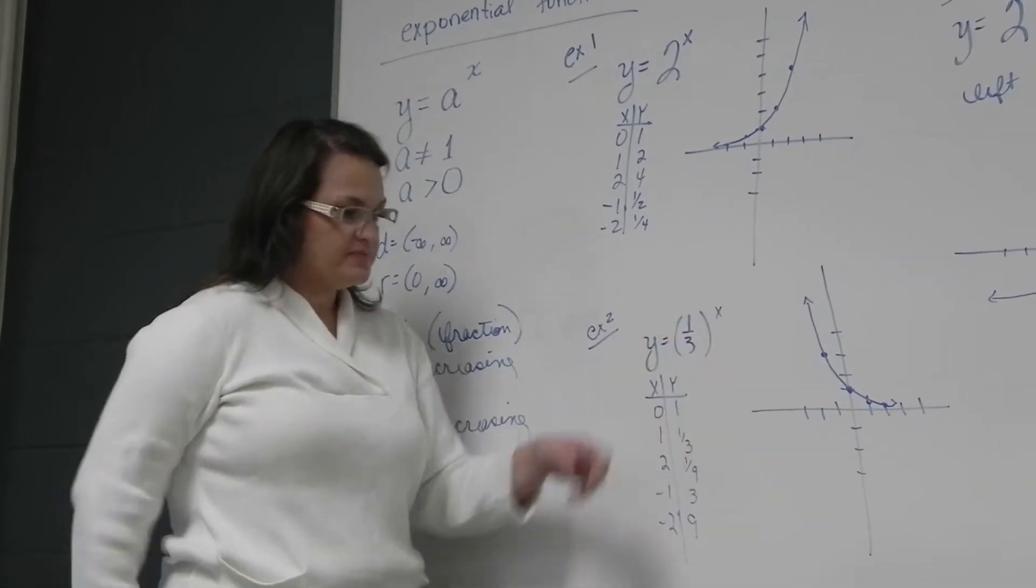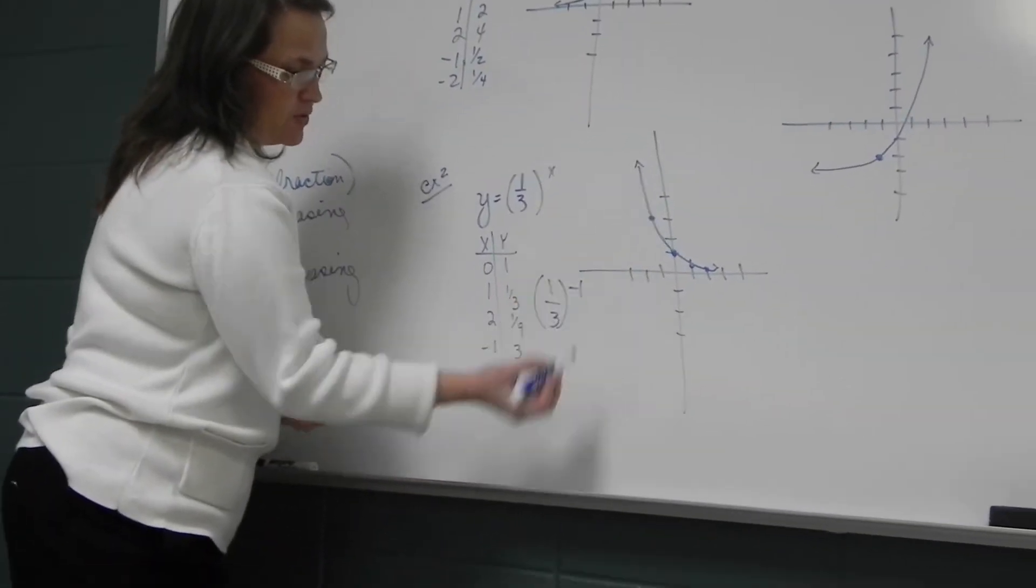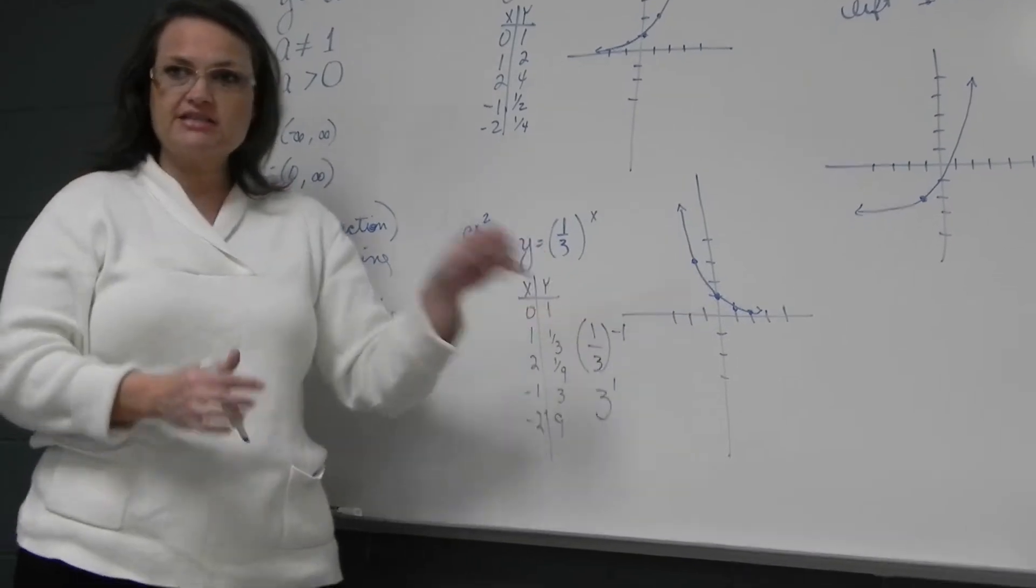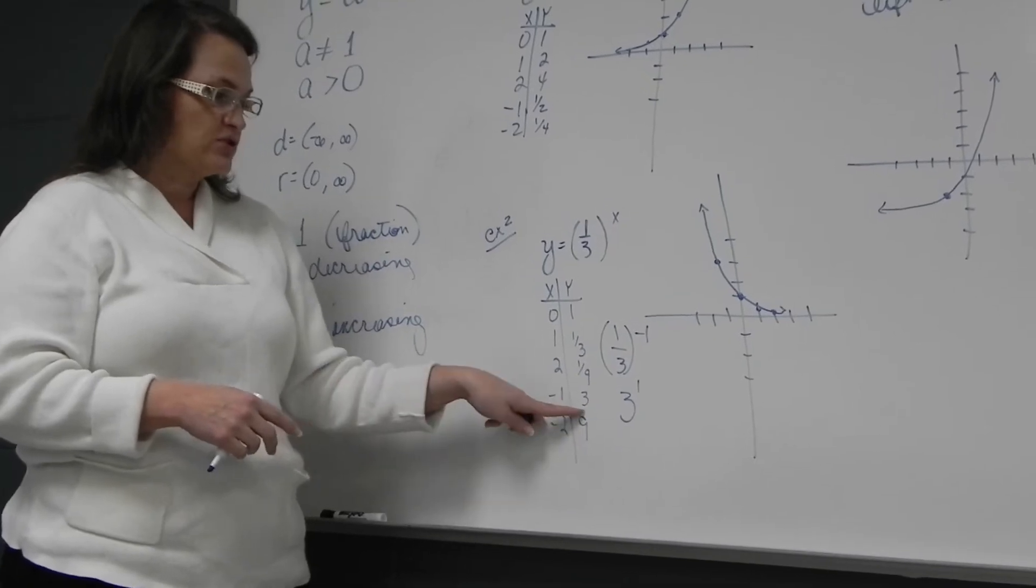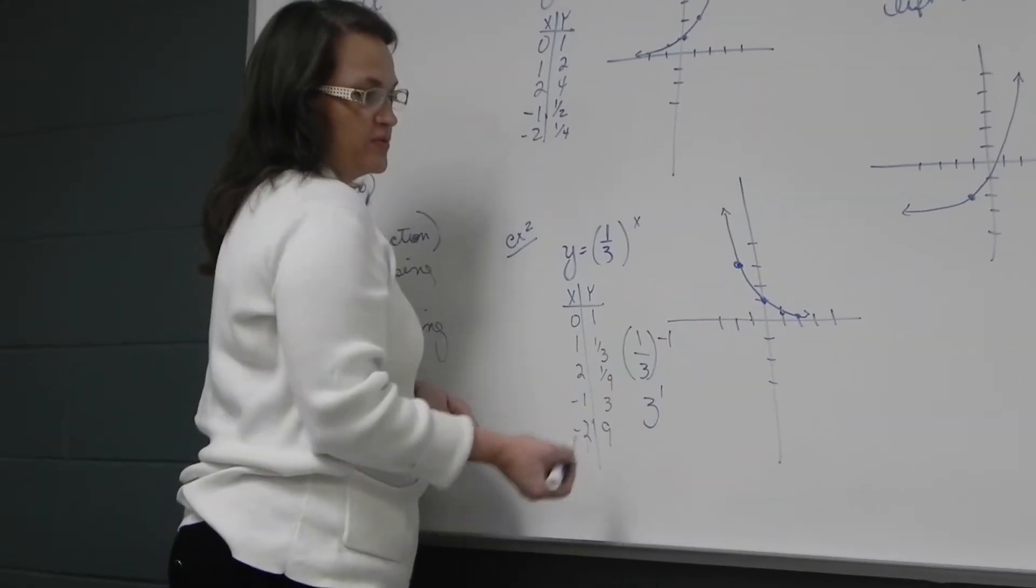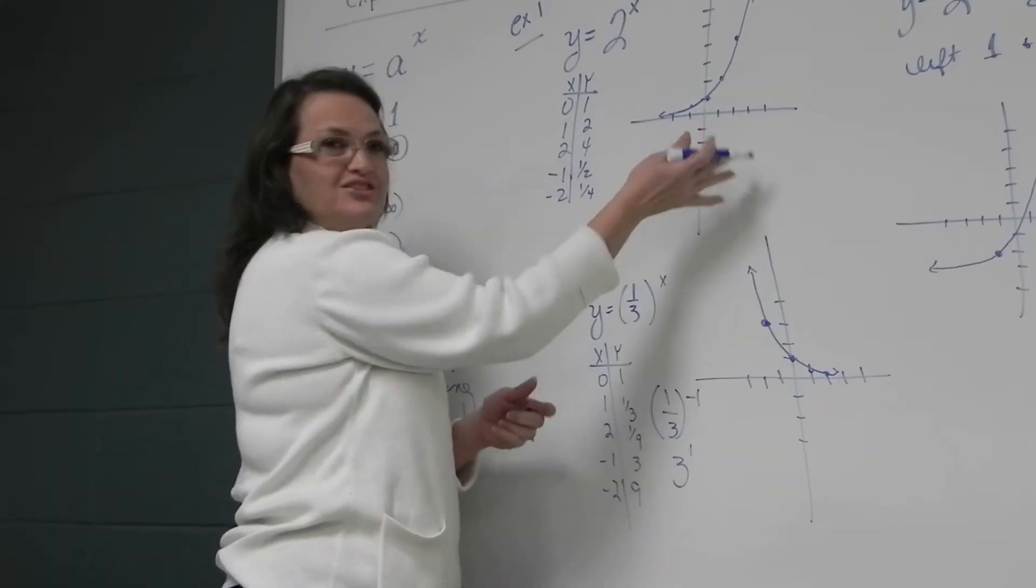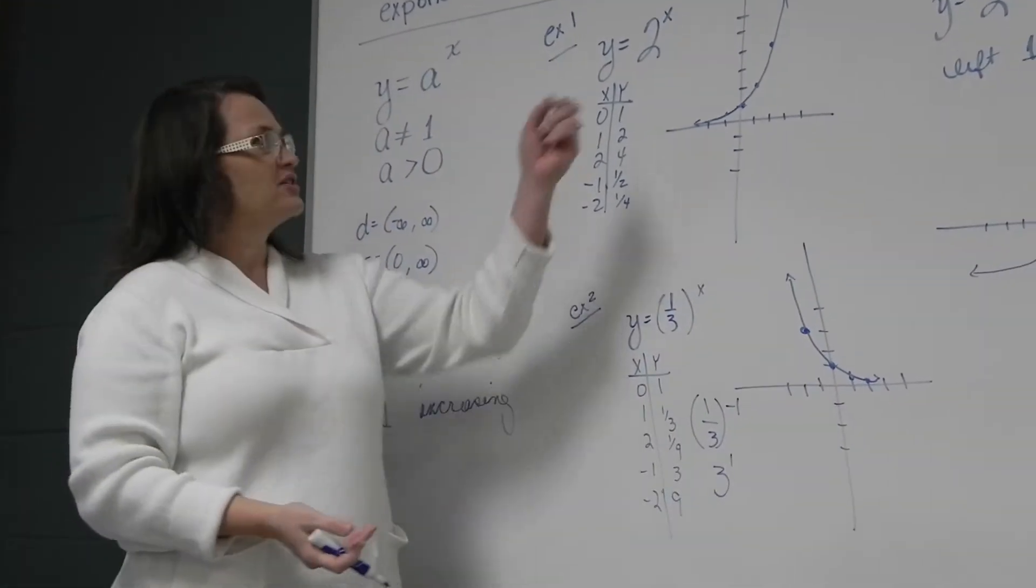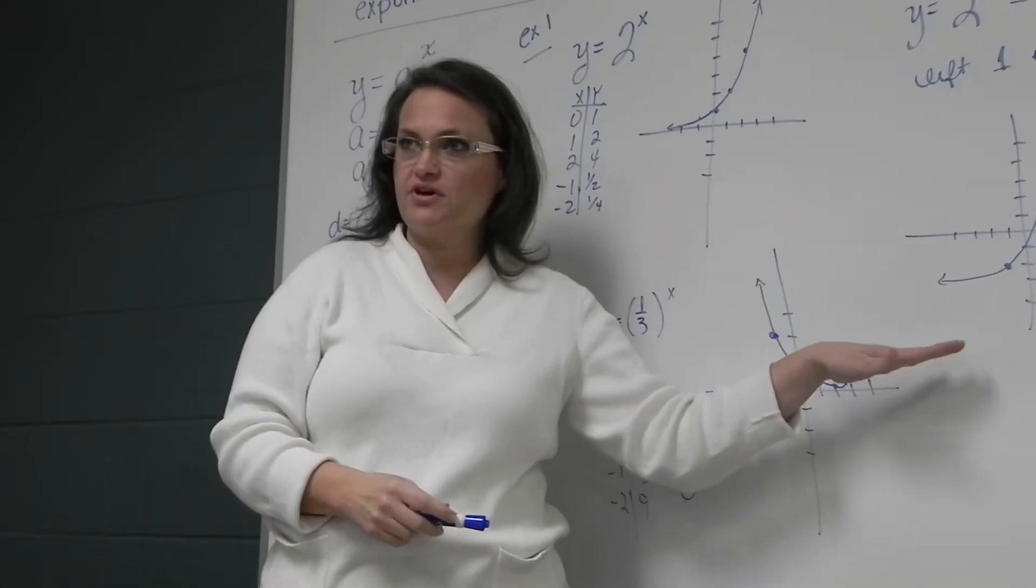Plugging in negative numbers, one third, notice, to the negative 1 would be like saying 3 to the positive 1. You know, a negative exponent flips a fraction, so it turns that around. So that's like saying 3 to the first, or 3. So back 1 is up 3. Back 2 is up 9, wherever that would be. So this is the tall side. So the curve looks exactly like the curve did on example 1, only it's coming downhill. So we say it's a decreasing function.